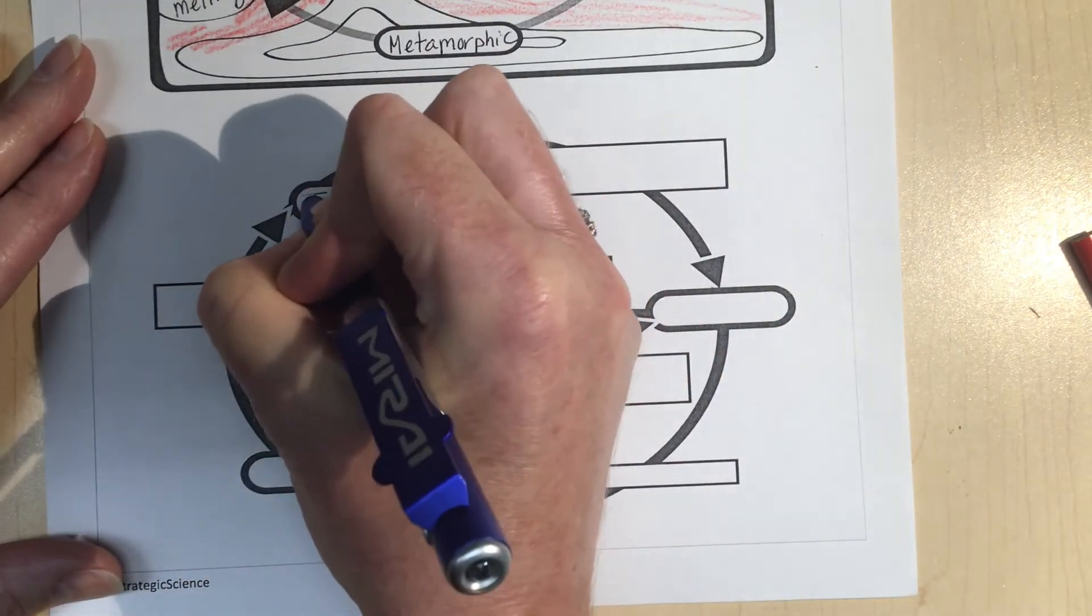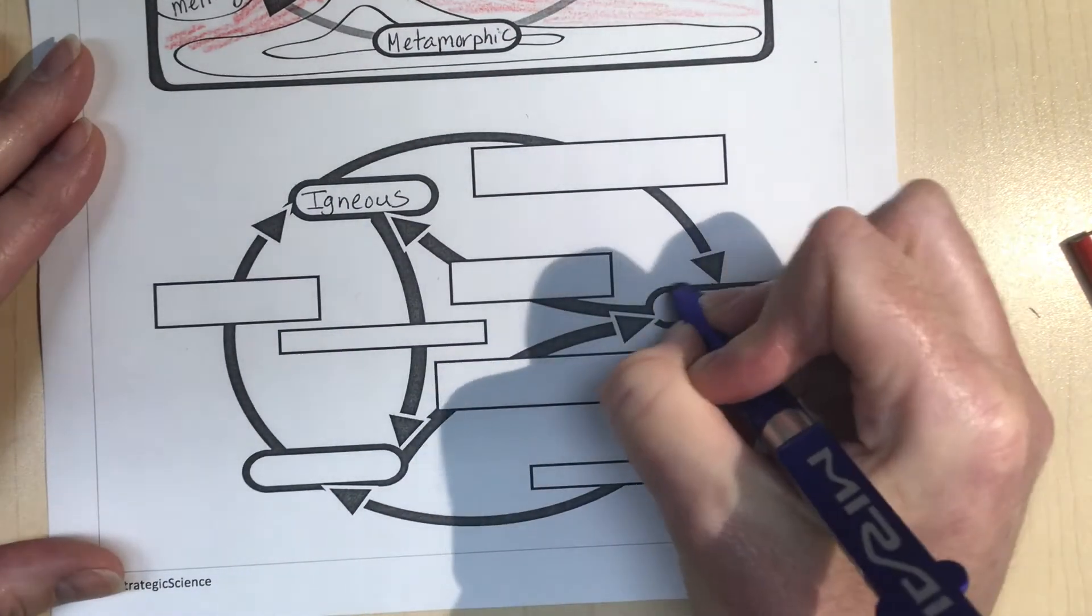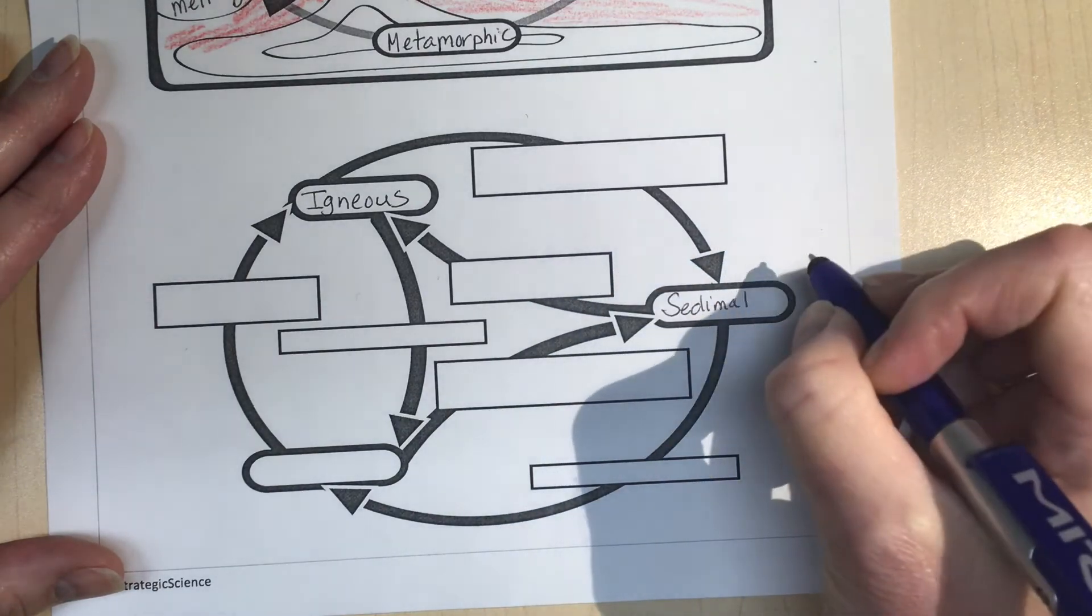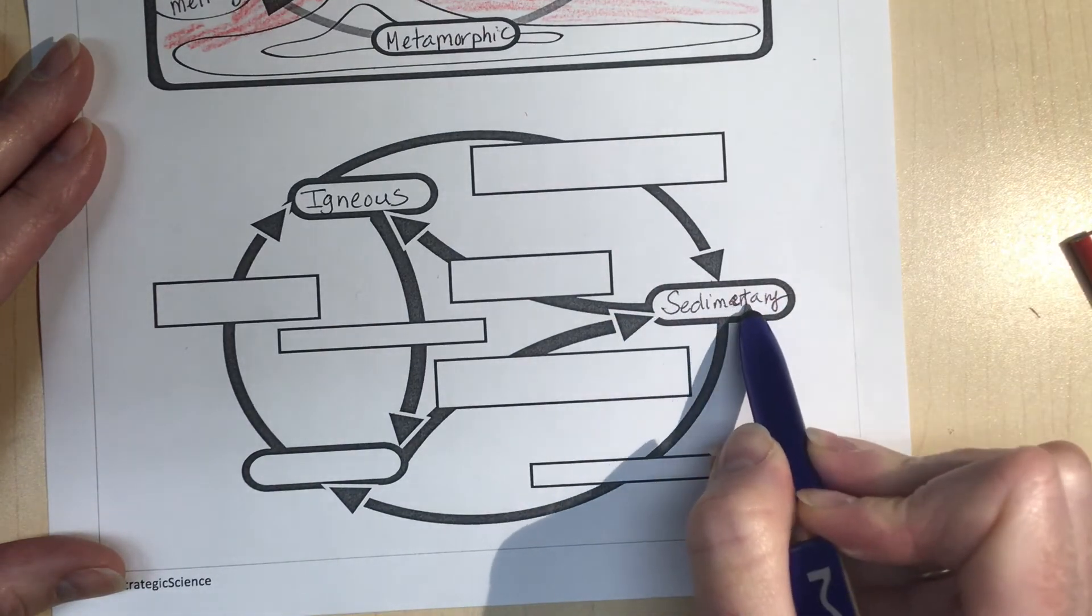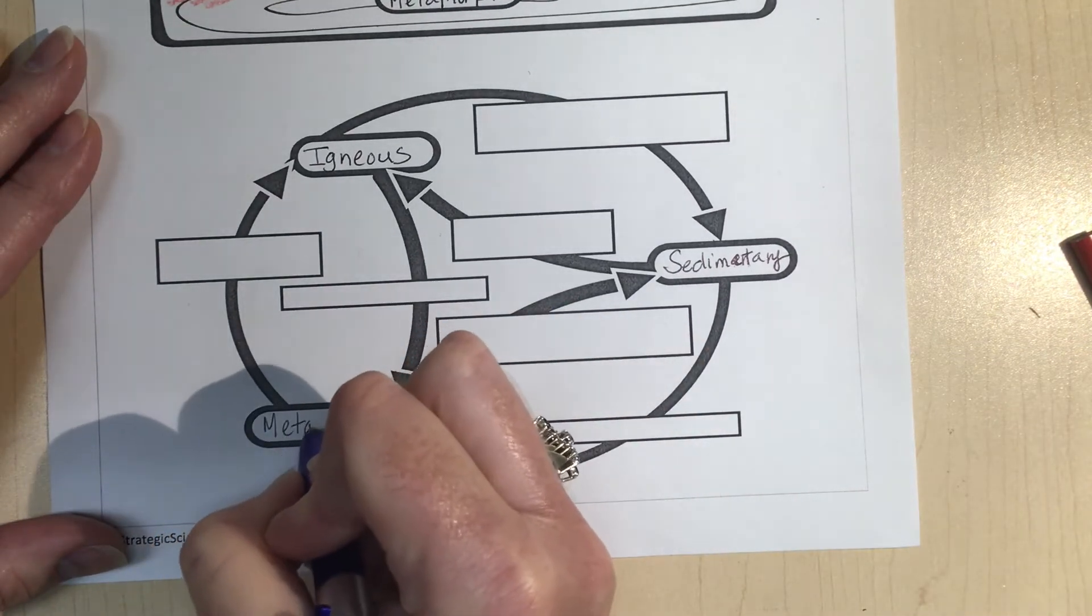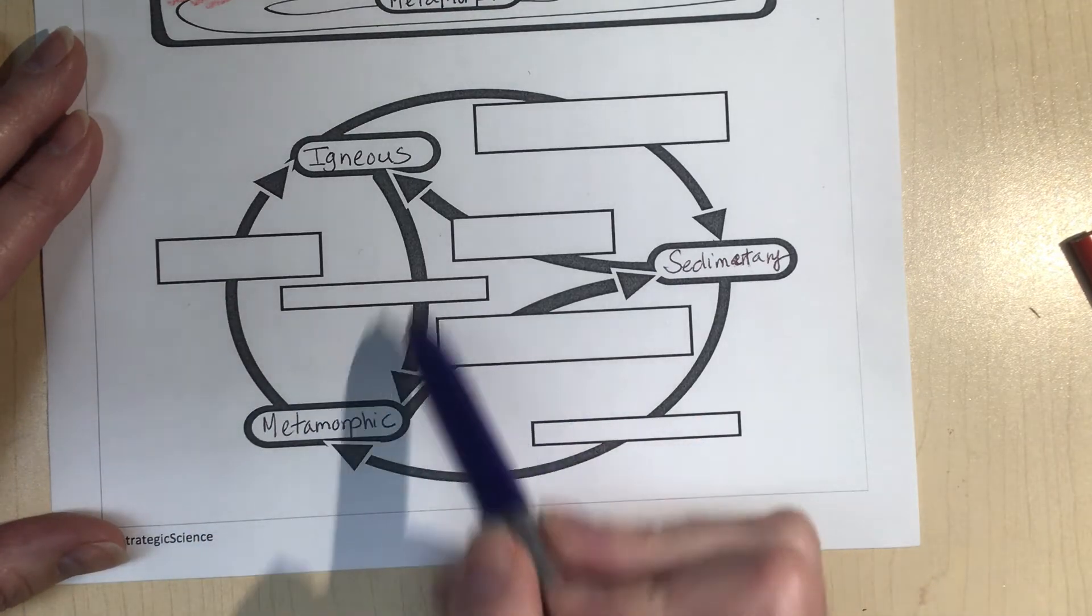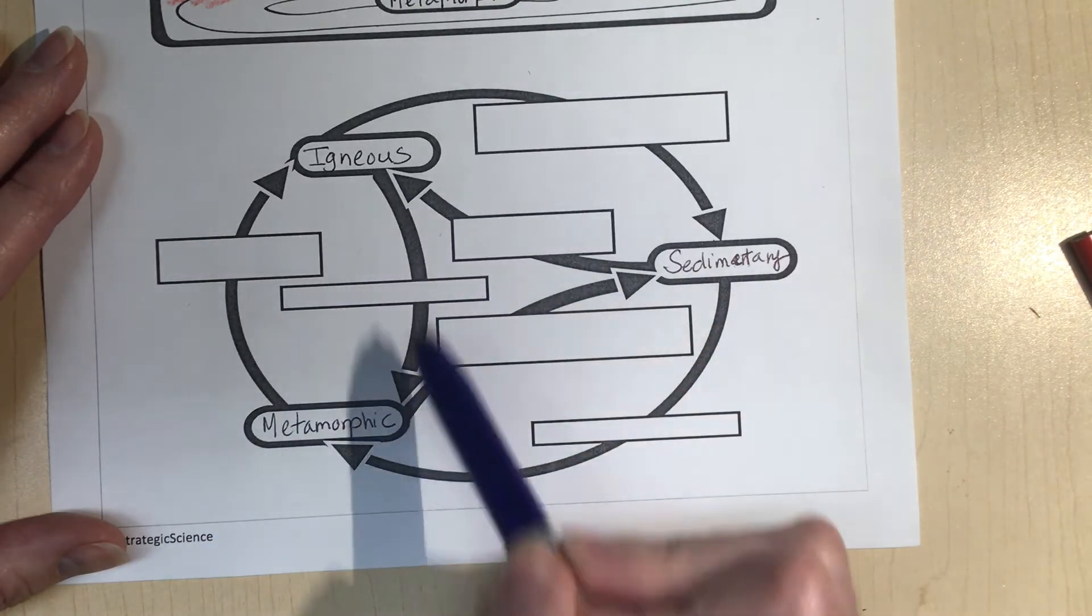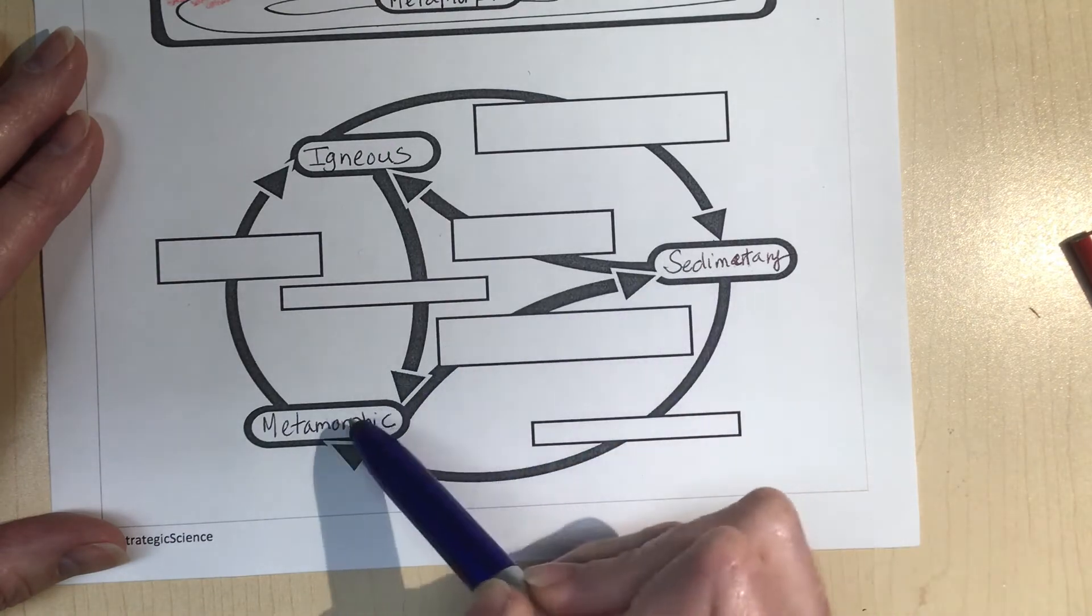So the first one here, let's go ahead and label igneous, and then we have our next kind which is sedimentary, and then down here is metamorphic. So you can see by this diagram that they can all turn into each other. Igneous can turn into metamorphic and over this way can turn into sedimentary. And same thing here, metamorphic can be sedimentary this way, can be igneous that way.